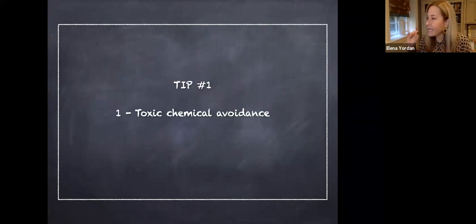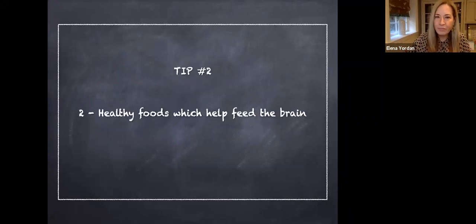Tip number one: toxic chemical avoidance. This is really easy if you're using doTERRA, because we just reduce the toxic load so much. If we're using things like the foaming hand soap, the laundry detergent, the on guard sprays, if we're making our own household cleaners, we can reduce that toxic load so much. Children are very porous. Always think about whenever you're adding something to your daily routine or to the routine of your household, how will my child absorb this?